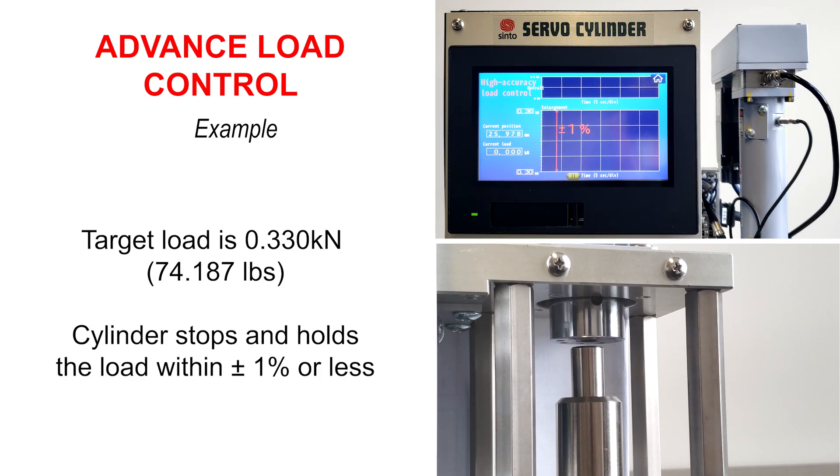Next, we'll show you an example of advanced load control. The top graph displays the cylinder's current load between 0 and 0.4 kN, and the bottom display shows the cylinder's load between 0.30 and 0.36 kN. The cylinder is now programmed to advance until it sees a load of 0.33 kN. Notice the load accuracy of the Cinto servo cylinder is plus or minus 1% or less.